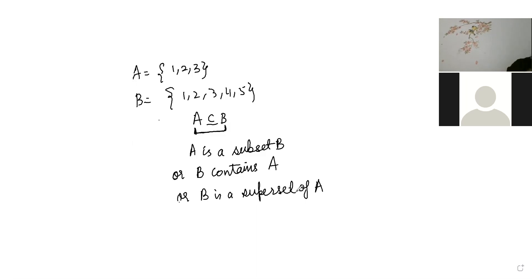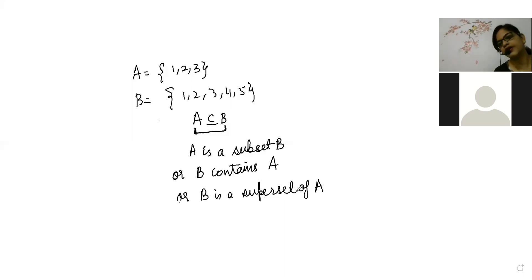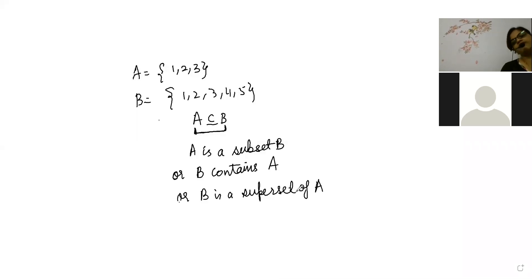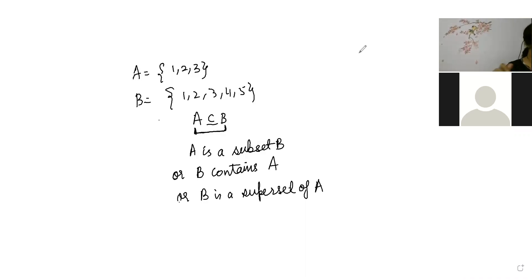So you can call it in three names: B contains A, B is a superset of A, or A is a subset of B. Now let's talk about proper set — that is exactly called as proper subset.